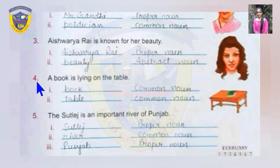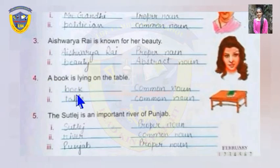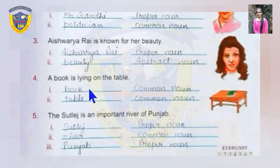In the fourth sentence: a book is lying on the table. Here, book and table are nouns, and both are common nouns because they are not the name of a specific thing. If a specific book name were given, like the Bhagavad Gita, then it would be a proper noun. But here only the word 'book' is used, so it's a common noun.